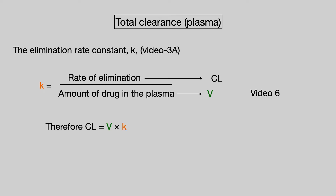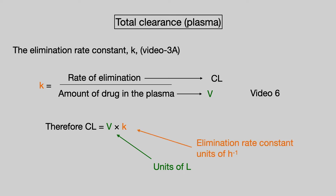A quick word on units: volume of distribution has units of volume, typically litres, and the elimination rate constant has units of per time, typically per hour. Therefore, this confirms that clearance has units of litres per hour.